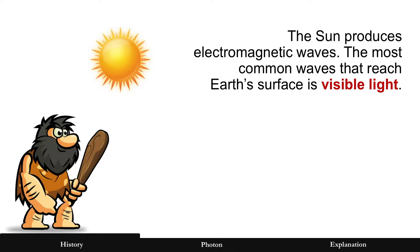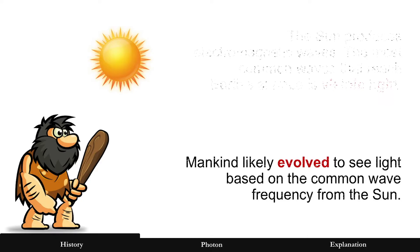In fact, the most common frequencies that reach Earth's surface is what we see as visible light, and it's likely that mankind evolved to see light because these are the most common frequencies from the Sun.